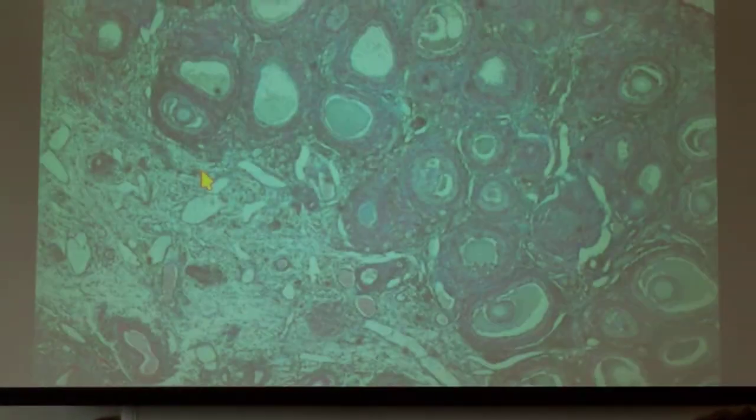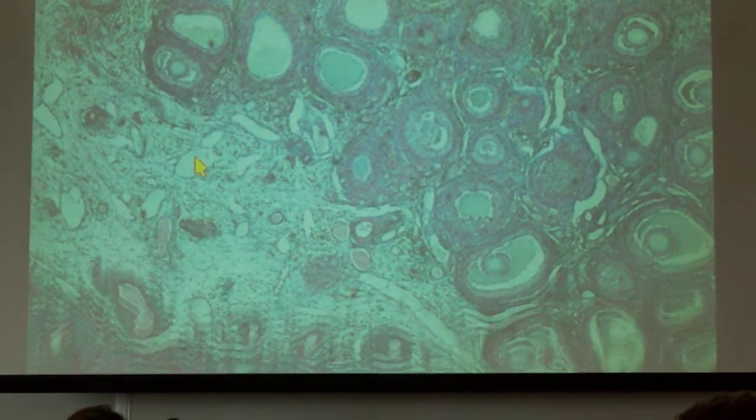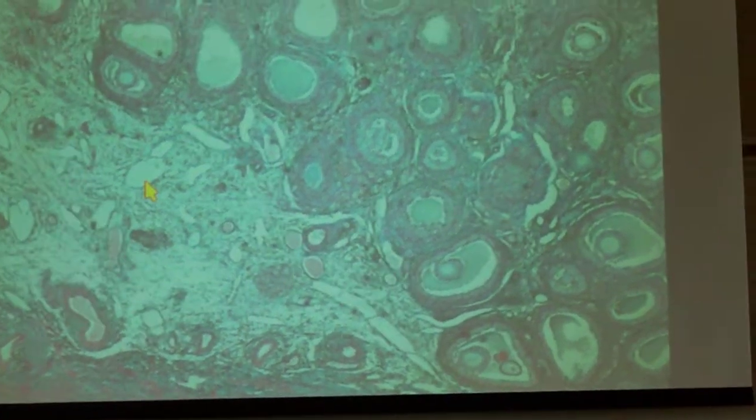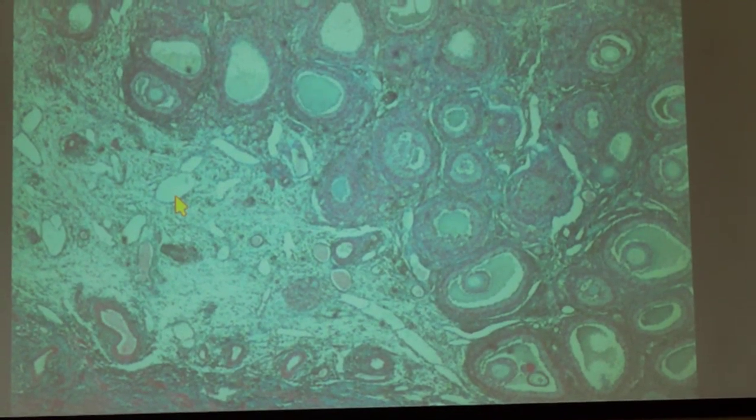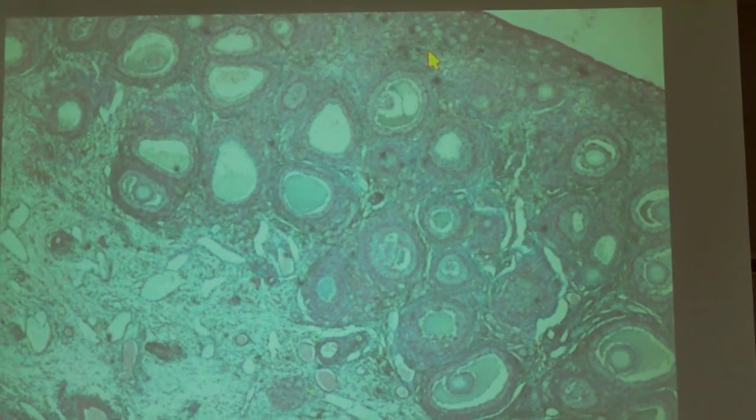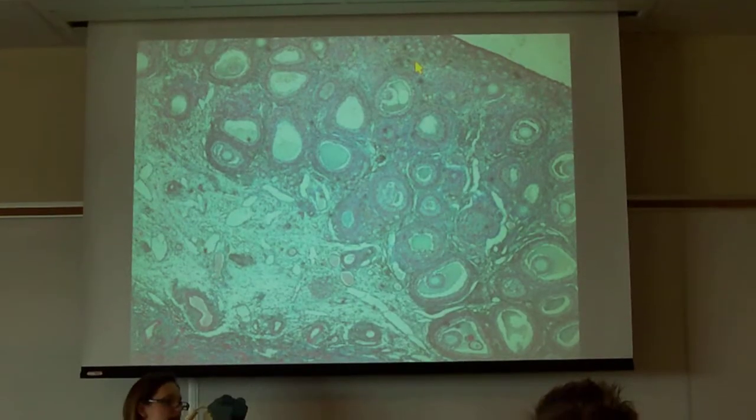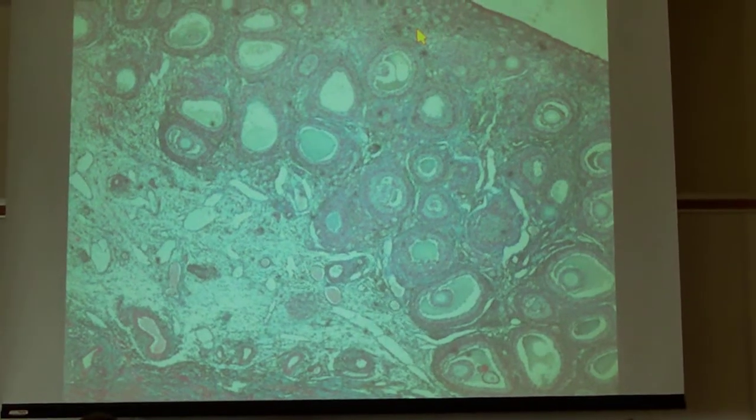The harder one is the ovary. Now the ovary is where we're actually going to make an egg. There it is. Okay? So what they want you to be able to find are the follicles. So what happens is we make eggs after puberty. Well, actually, we make the eggs before we're born. They kind of stay there. At puberty, we begin to release an egg or two every month.